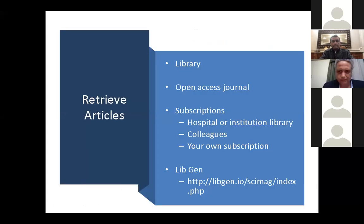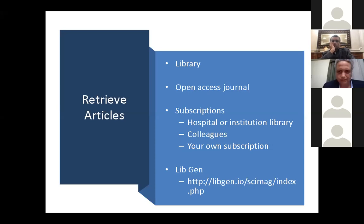Once you've done your online research and defined which articles or books you'll use, you need to retrieve them. First, check the library — especially for books and subscribed journals. Open access journals are free online and provide full articles, not just abstracts. If your institution has subscriptions, or through the Egyptian Knowledge Bank, you can access articles through a colleague's subscription, your own personal subscription to favorite journals in your subspecialty, or free resources like Libgen.